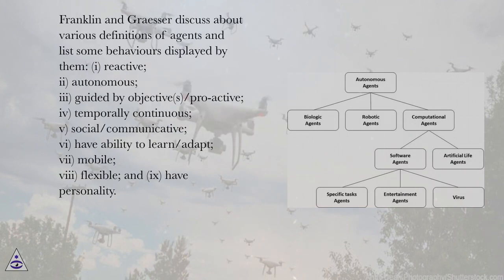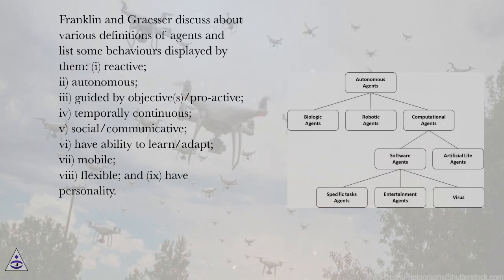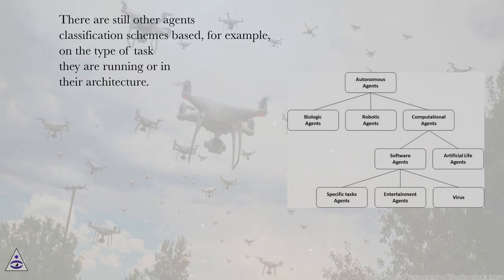Franklin and Grasser discuss various definitions of agents and list some behaviors displayed by them: 1. Reactive; 2. Autonomous; 3. Guided by objective/proactive; 4. Temporally continuous; 5. Social/communicative; 6. Have ability to learn/adapt; 7. Mobile; 8. Flexible; and 9. Have personality. There are still other agent classification schemes based, for example, on the type of task they are running or on their architecture.